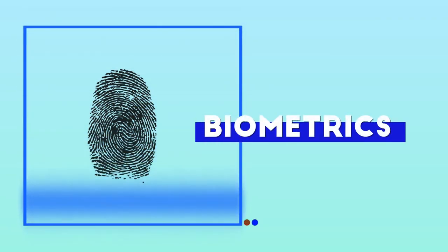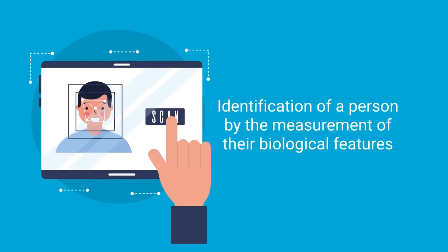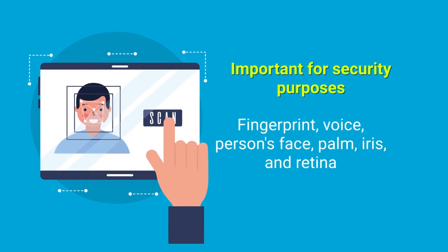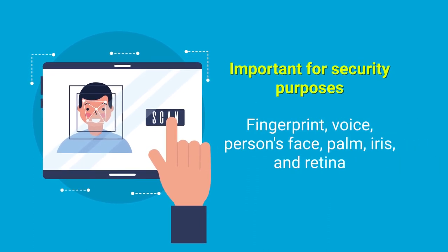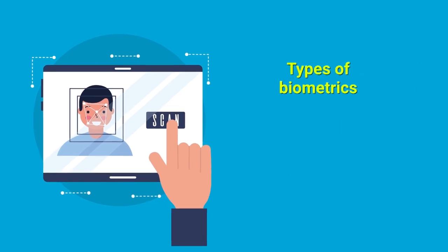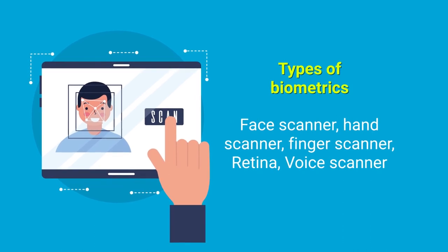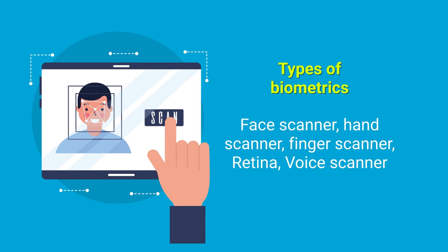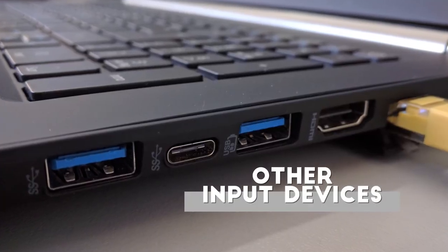Biometric devices use biological features and are very important for security purposes. They include fingerprint, voice, face, palm/hand, and retina scanners. We can use a face scanner, hand scanner, finger scanner, retina scanner, or voice scanner as different types of biometric input devices.